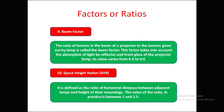Space-height ratio is defined as the ratio of horizontal distance between adjacent lamps to the height of the mounting. In practice, this ratio is between 1 and 1.5.